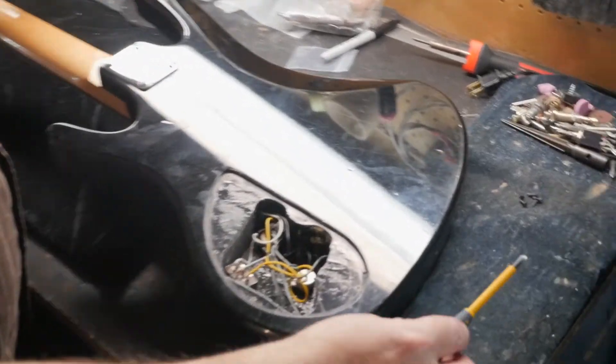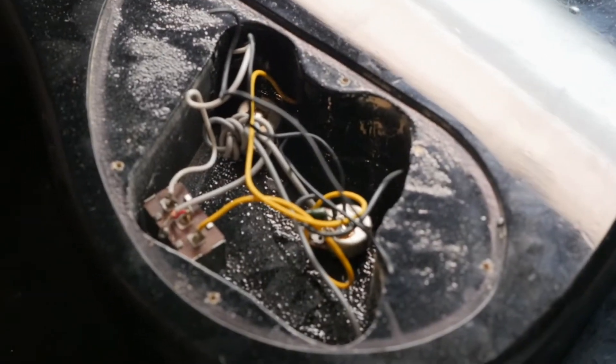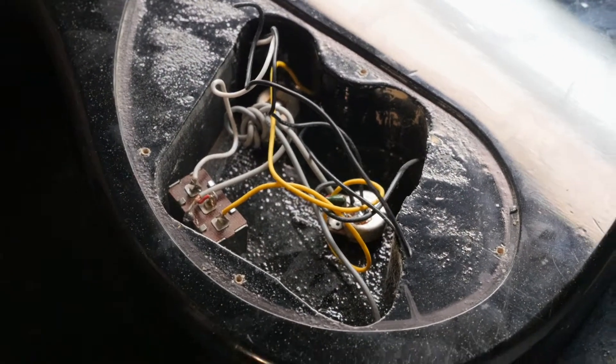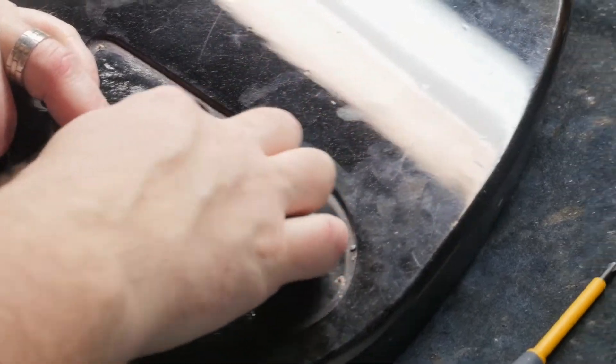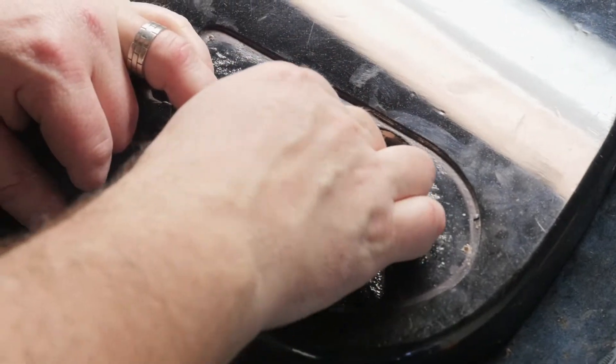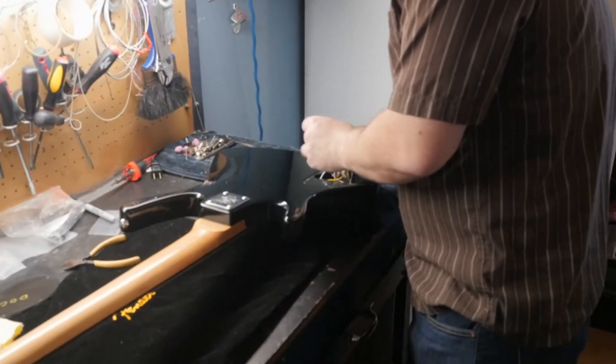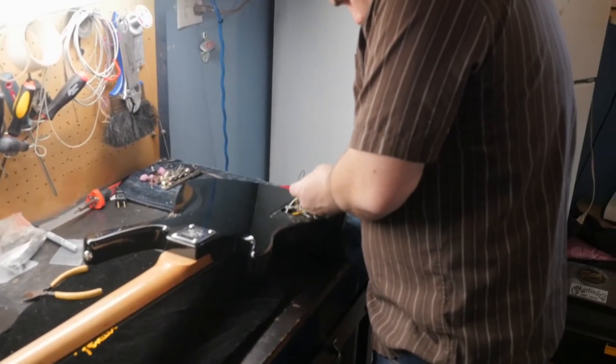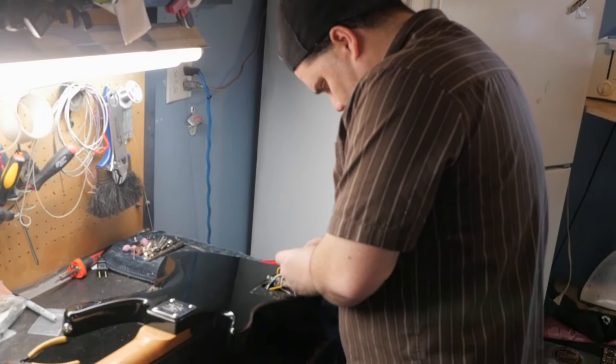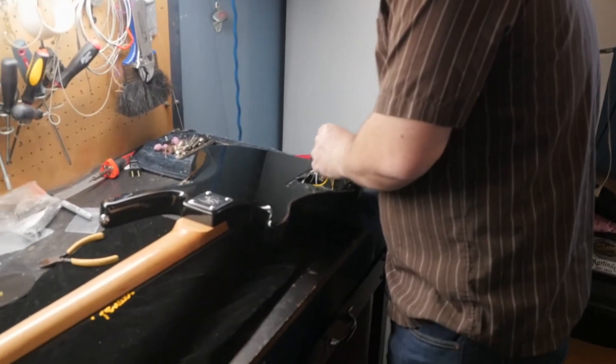As you can see these wires are quite twisted, so that means the pot has been loose for some time. Usually people just keep turning it and turning it and twist the wires up and eventually they break off. What we're probably going to have to do is a little soldering, a little rewiring, anything that's a mess.